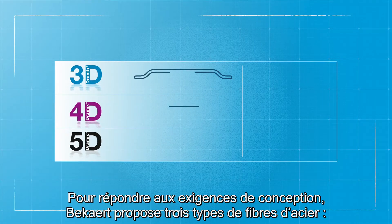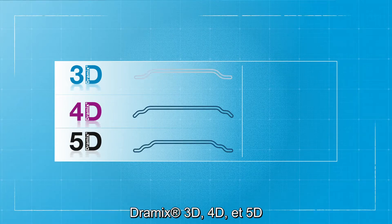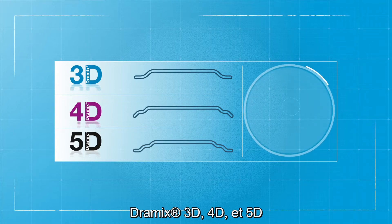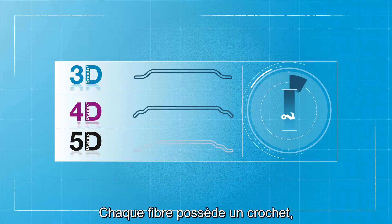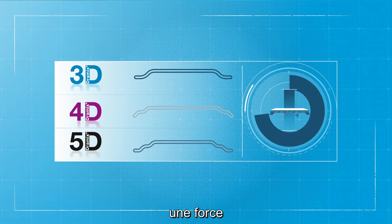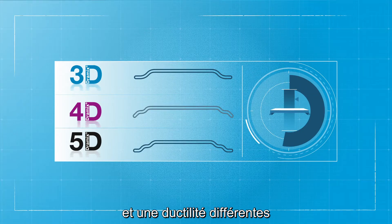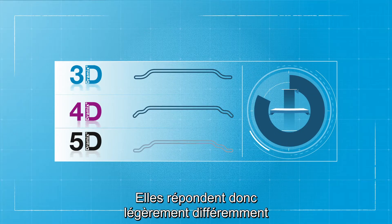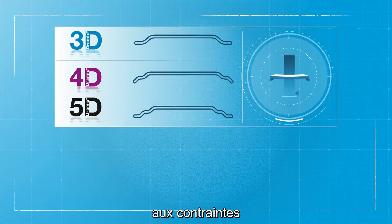Different loads require different steel fibers. To meet any design requirement, Bekaert offers three steel fiber types: Dramix 3D, 4D, and 5D. Each fiber has a different hook, strength, and ductility. Consequently, they also behave slightly differently when dealing with stresses.